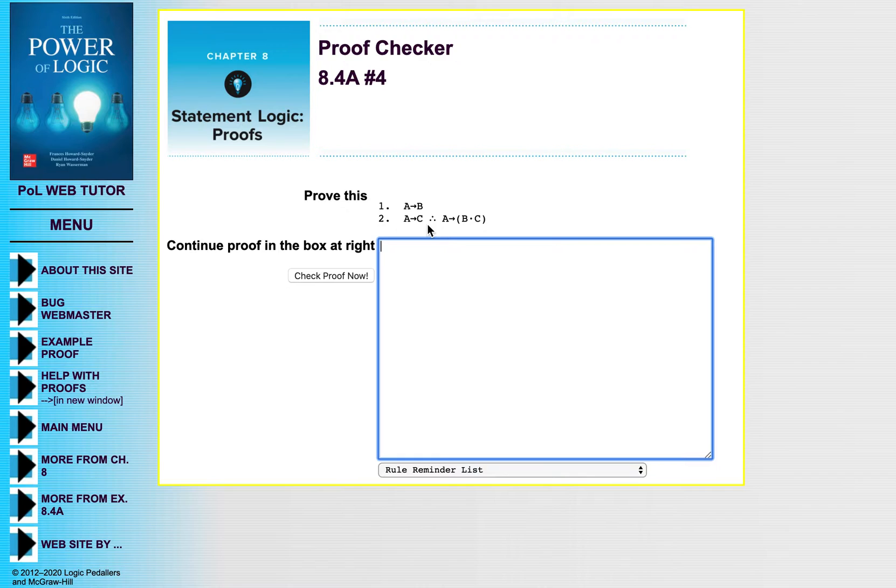If A, that's what that means, assume A is true. Then we want to get B and C. And if we assume this and get this, then we can put down the conditional and justify our proof by CP, the conditional proof.